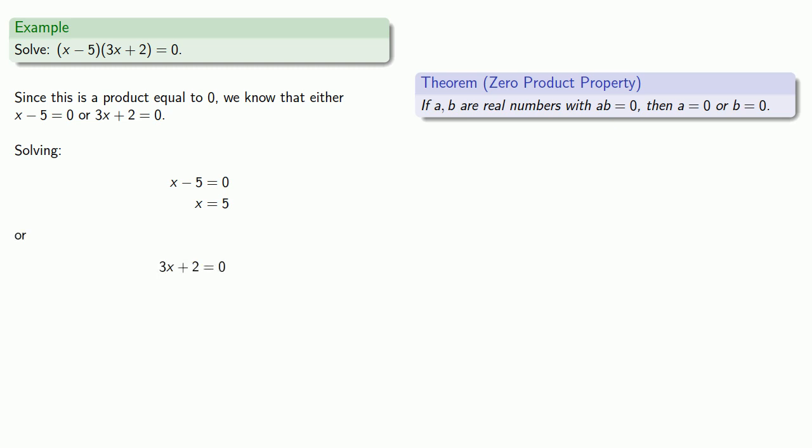Solving 3x plus 2 equals zero gives us the solution x equals minus 2 thirds. So either x is equal to 5 or x is equal to minus 2 thirds.